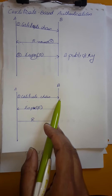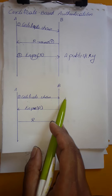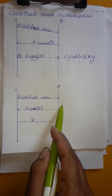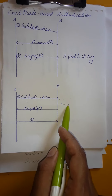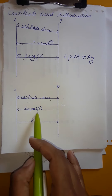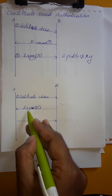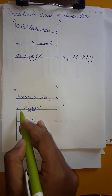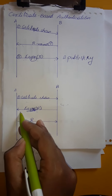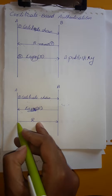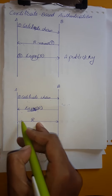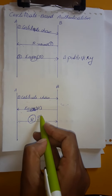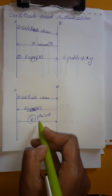In the second variant: A will send a certificate to B, B is going to perform all verification on the certificate, then he is going to generate the random number R. On that R, he is going to perform encryption by using A's public key, and that will be sent to A. After receiving that second message, A is going to perform decryption using his private key.